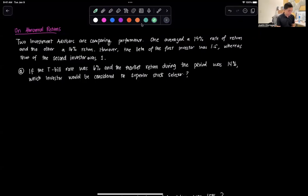Hi everyone and welcome to this video on a sample problem involving abnormal returns and alpha and betas in a simple CAPM model. Suppose we have two investment advisors that are comparing each other's performance. One investment advisor averaged a 19% rate of return and the other one a 16% rate of return. We're also given the betas of each of these advisors.